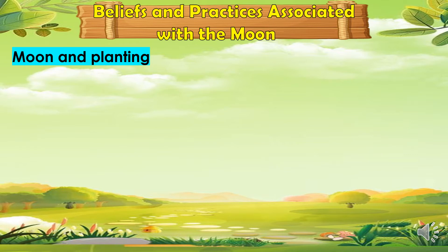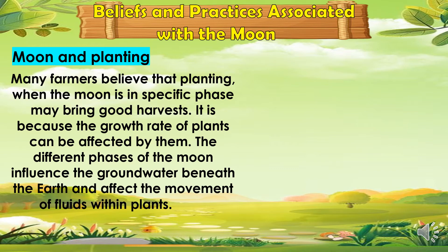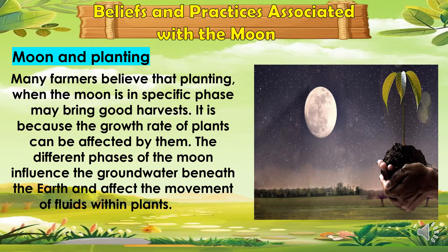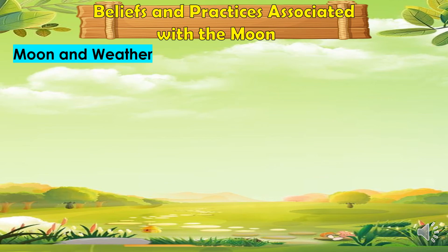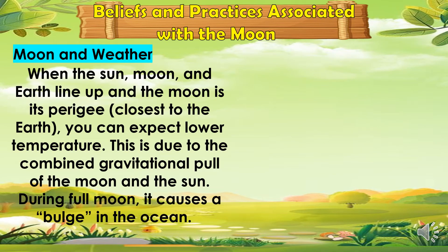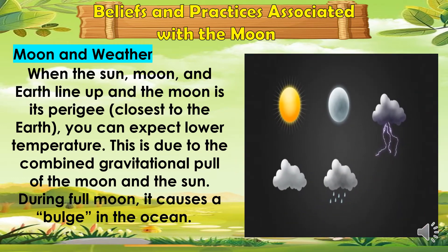Let us discuss the moon and planting. Many farmers believe that planting when the moon is in its specific phase may bring good harvest. It is because the growth rate of plants can be affected by it. The different phases of the moon influence the groundwater beneath the earth and affect the movement of fluids within plants. During full moon, the combined gravitational pull of the moon and the sun causes a bulge in the ocean.